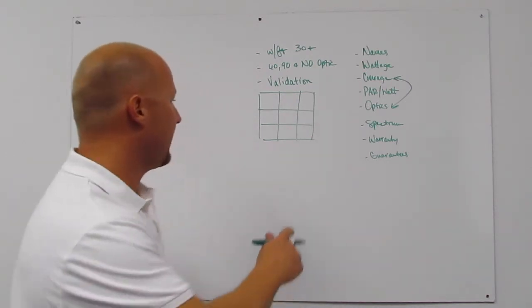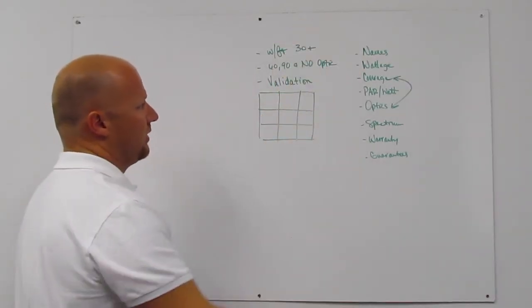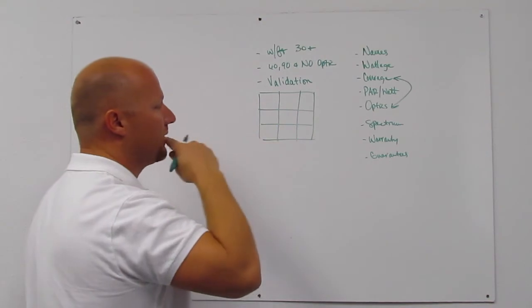Let's use this example. We have a 3 foot by 3 foot space, and we need 30 plus watts per foot. So that's 270 watts. Let's round it up to 300 watts.